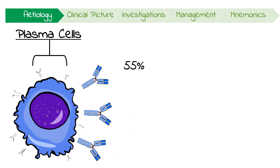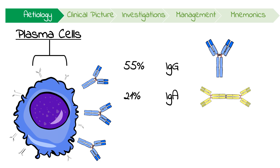55% of the time, a patient with multiple myeloma will have a monoclonal antibody that's an IgG subtype. 21% of the time, it will be IgA. 22% of the time, it will be the light chain only.